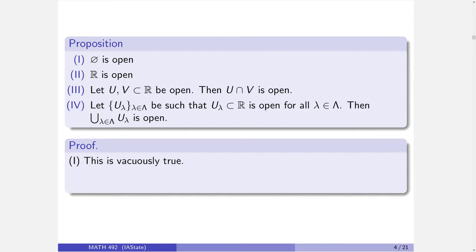The empty set is vacuously open — vacuously true. Think about what the definition is: given an element in the set, there are things that happen. The statement is A implies B. Nothing is in the empty set, so A is always false. But from a false hypothesis, the implication is always true — you can conclude anything. So the empty set is technically open. It's technically correct, the best kind.